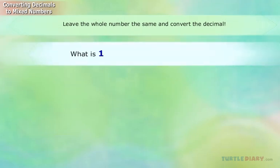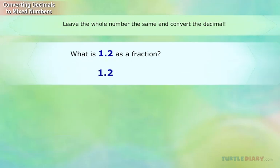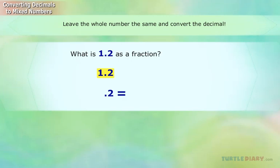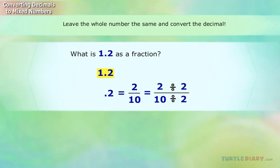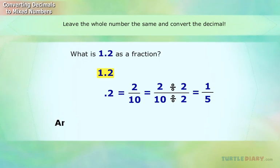What is 1.2 as a fraction? Look only at the digits to the right of the decimal point in 1.2. Just change .2 to a fraction: 2 tenths. Now reduce the fraction — 2 tenths divided by 2 equals one-fifth. Answer: 1 and one-fifth.